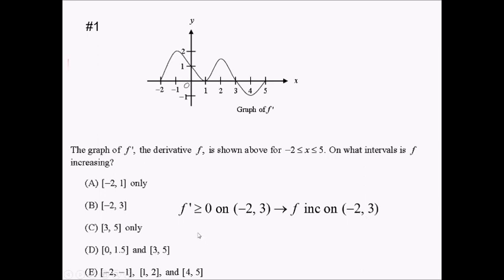There is an answer choice for negative 2 to 3. You notice there's no answer choice for negative 2 to 1 union 1 to 3. It's just that one, so choice B.